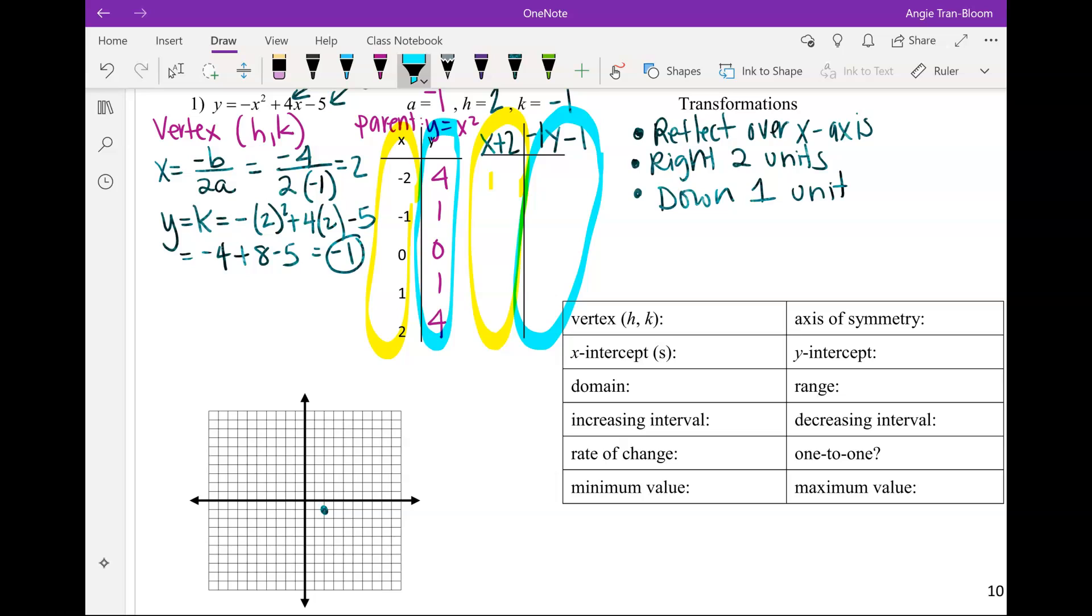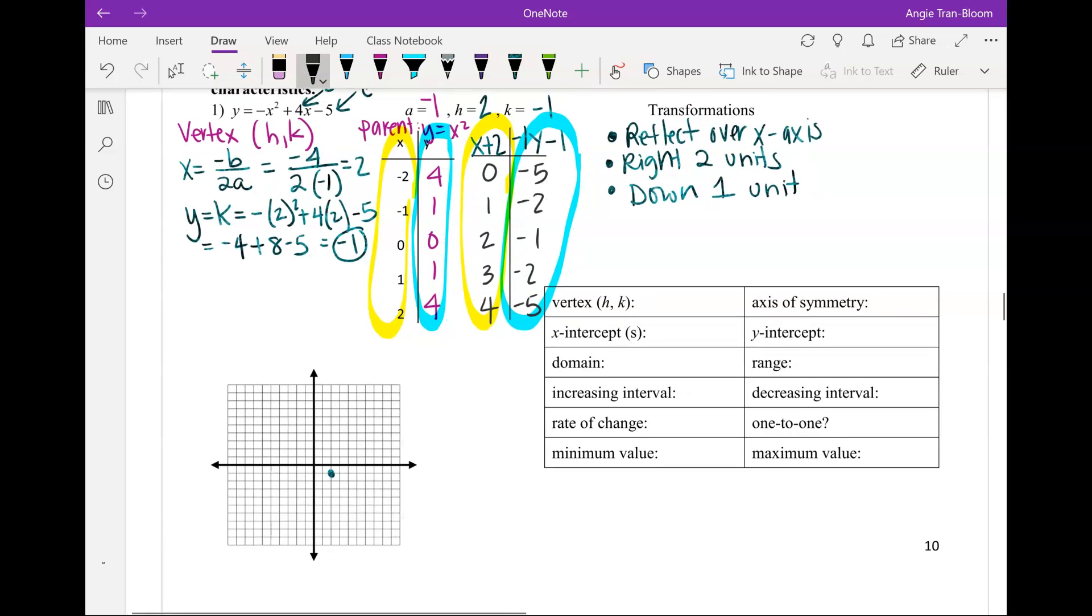Grace, can you give me the transformed inputs, all five of them? 0, 1, 2, 3, and 4. Good. Five outputs? Kyler, give me our new five outputs. Negative 5, negative 2, negative 1, negative 2, negative 5. Okay, let's plot. Should we already have the vertex on there? Yeah, look at that.